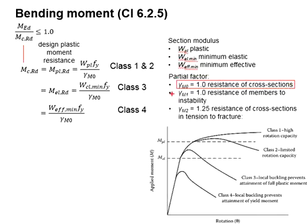For your information, you may encounter other types of partial factors, which include gamma_M1 meant for the resistance of a member due to instability, and gamma_M2, which is the resistance of the cross section in tensions due to fracture.